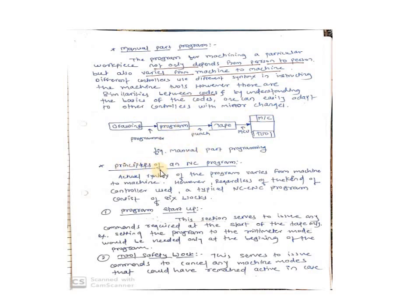We will see the principles of an NC program — what are the principles required for this numerical control program. There are a total of six blocks. This actual syntax of the program varies from machine to machine, depending on the kind of controller used for the typical NC machine. The first block is program startup. Before going to start any program, we have to define the unit for that program and whatever requirements of the procedure. Before starting the program, we have to give some input. That is the first block — program startup.